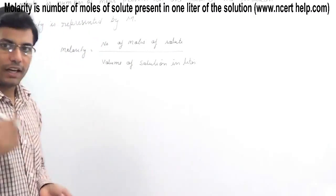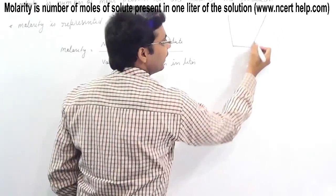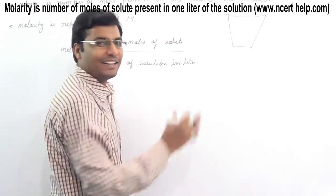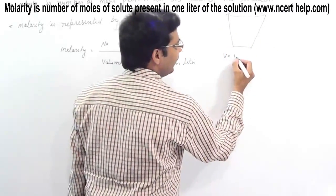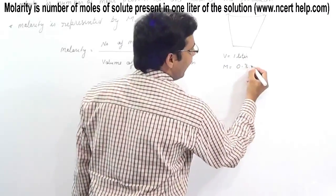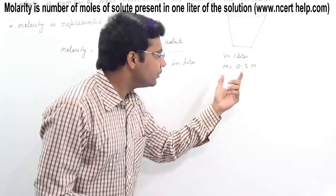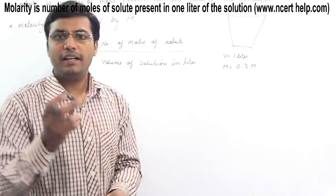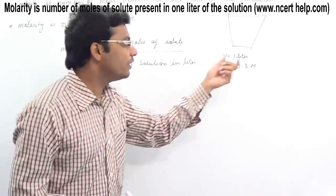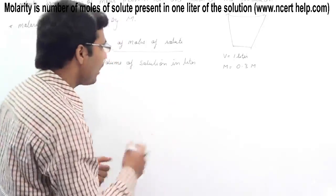Let's take an example. We have a container — like a glass of water — and the volume of this container is 1 liter, and its molarity is 0.3 M. What does this 0.3 M represent? It means that in this solution, there are 0.3 moles of solute present.